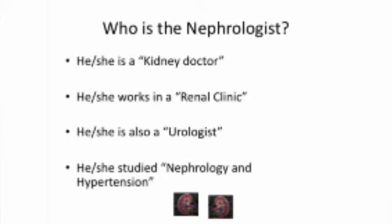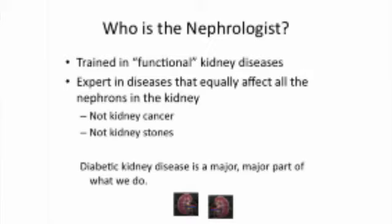A nephrologist is someone who's been trained in nephrology and hypertension. Nephrology refers to any functional kidney disease. If you think of the kidney as a filtering organ — it filters the blood and cleans the blood — it's essentially bathed in the nutrients that bathe the rest of the body. If something happens to one unit within the kidney and that same thing happens to every other unit, that's what we call a functional kidney problem, and that's the domain of nephrologists. It does not tread on the domain of urologists, who are surgeons dealing with the kidney, but they don't deal with people who have diabetic kidney disease.